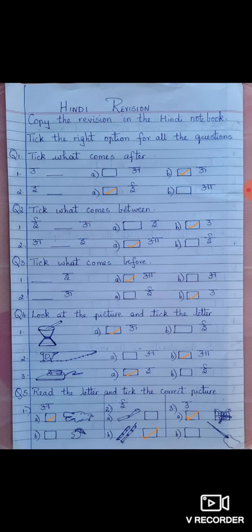The third picture is ISTIRI. The picture begins with the letter E. So you will tick option A E.